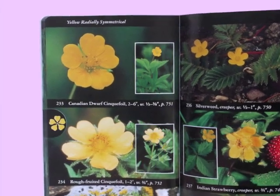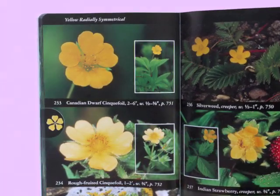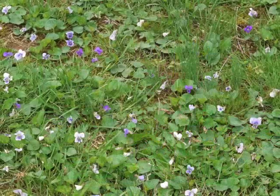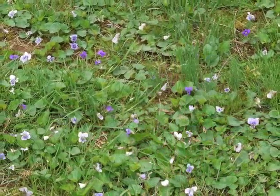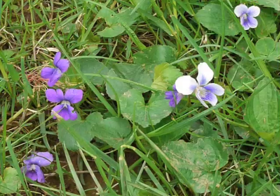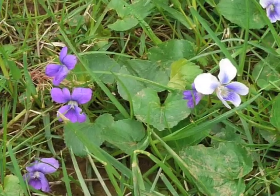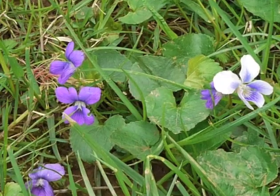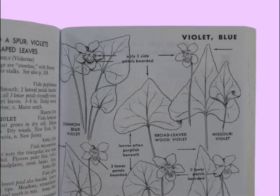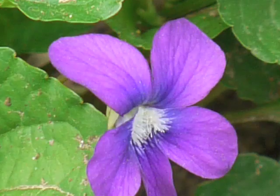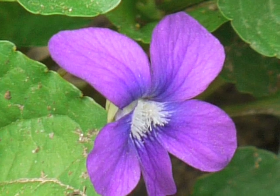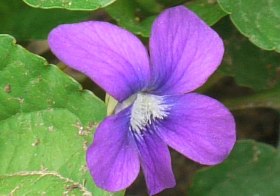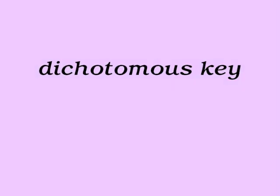The Peterson Field Guide for Wildflowers also groups flowers by color; however, this field guide primarily uses black and white line drawings of the flowering plant rather than photographs. Another typical plant identification method is the dichotomous key, used in Fern Finder.